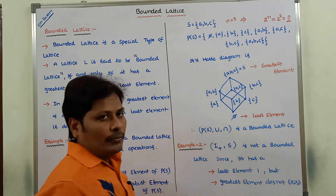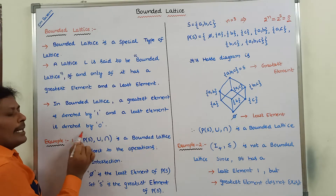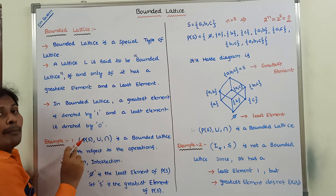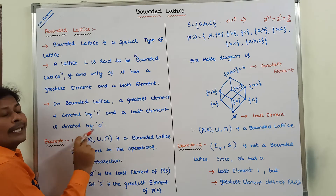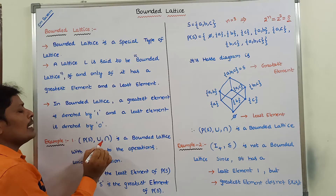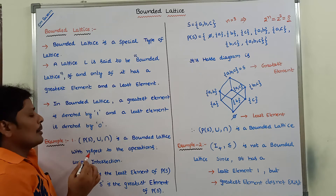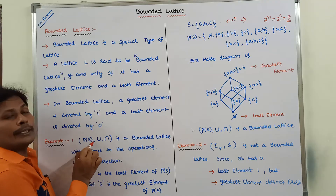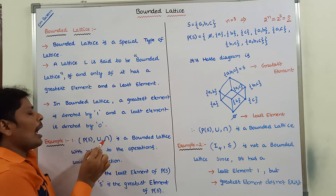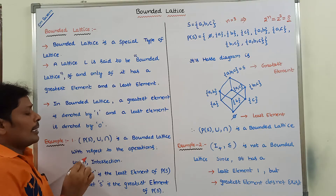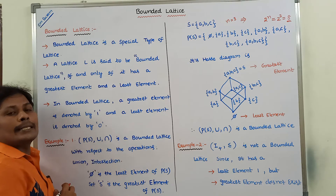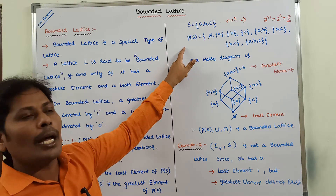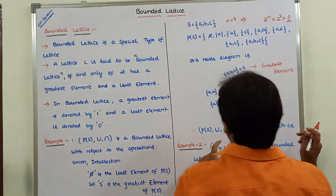The 8 elements in the power set of S are: null set (pi), {a}, {b}, {c}, {a,b}, {a,c}, {b,c}, and {a,b,c}. P(S) is the power set of S, and on that power set we have to perform two operations: union and intersection. For that power set of S we have to draw the Hasse diagram.